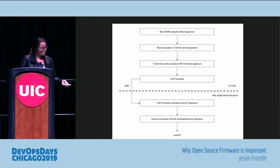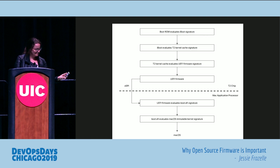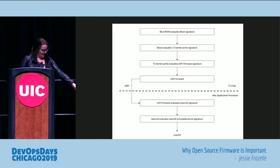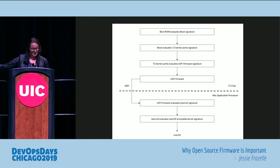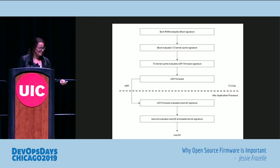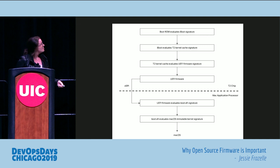Apple T2's boot process: boot ROM evaluates the iBoot signature, then iBoot evaluates the T2 kernel cache signature, then T2 evaluates the UEFI firmware signature, then it boots into UEFI — all on the T2 chip. Then over SPI, UEFI firmware evaluates the boot.efi signature, and boot.efi evaluates the macOS kernel signature. This is pretty clean and easier to wrap your head around — more like a relay where one thing leads to another. The paper also covers security enclaves for the iPhone, which is really well thought out.